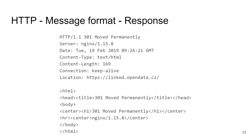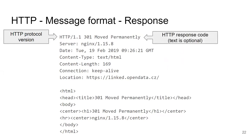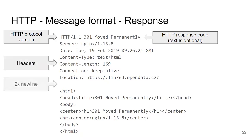Now let's look at the HTTP response. You see the protocol version, then the response code — important because it tells you what happened. There is an optional text representation of the code. Then there are again headers, two new lines, and then the body of the response. In this case we are getting an HTML page, indicated by the Content-Type header, and HTML is visible in the body.